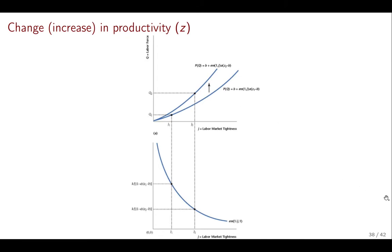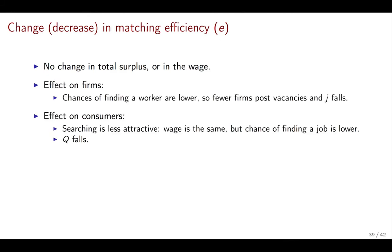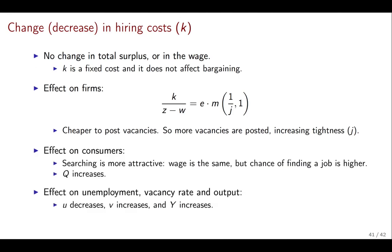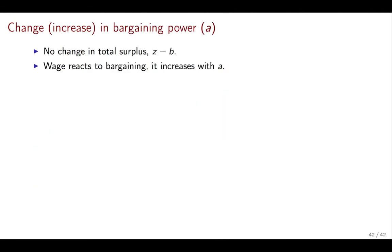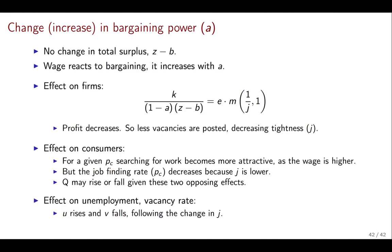I hope these two examples show you how you can use the model to do counterfactuals — thinking about what will happen if one of the variables of the model changes. There are other examples in the remaining slides that I invite you to go over, like a change in matching efficiency, a change in hiring cost, and a change in bargaining power. With these we are done for this module. I hope you come to me with your questions and I hope you've enjoyed these videos.